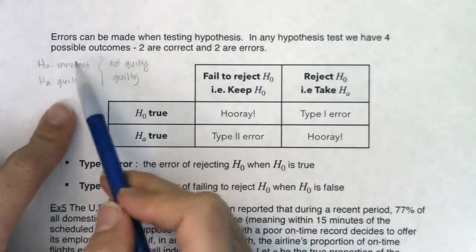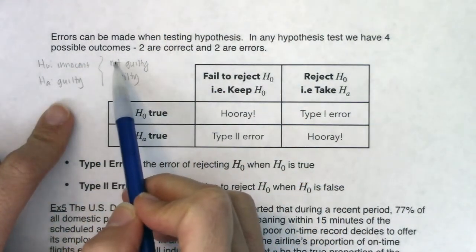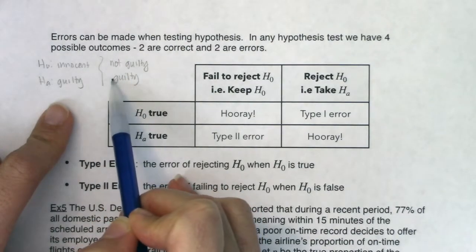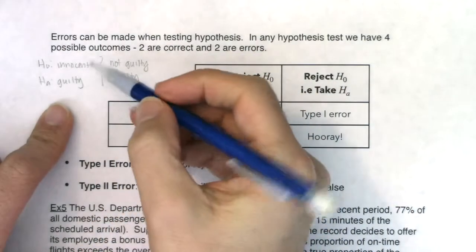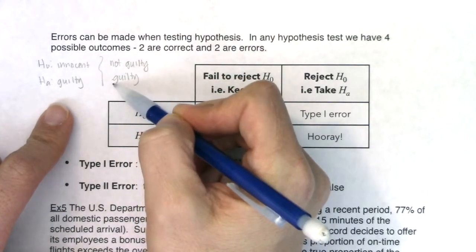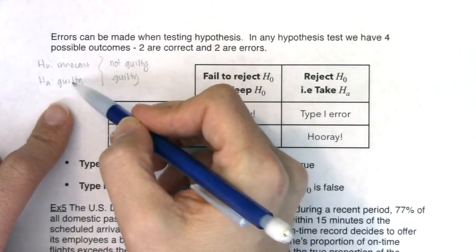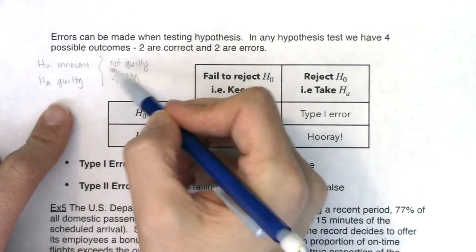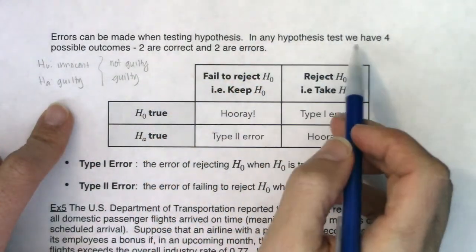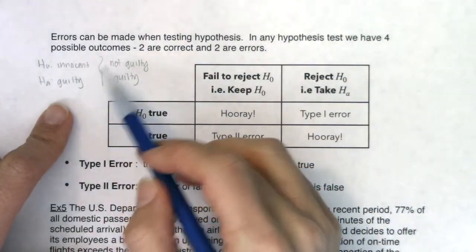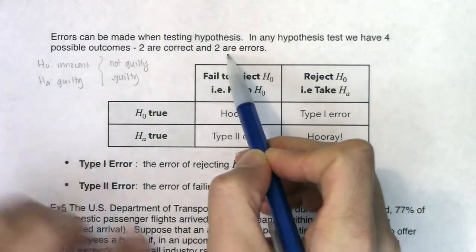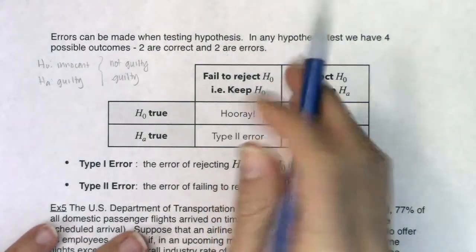If a person is innocent and you say they're not guilty, that's a good thing. If a person is guilty and you find them guilty, that's also good. But there are errors: if a person was innocent and you found them guilty, that's an error. Or if a person was guilty and you found them not guilty, that's also an error. In any test, there are always four possible outcomes: two correct, two errors.